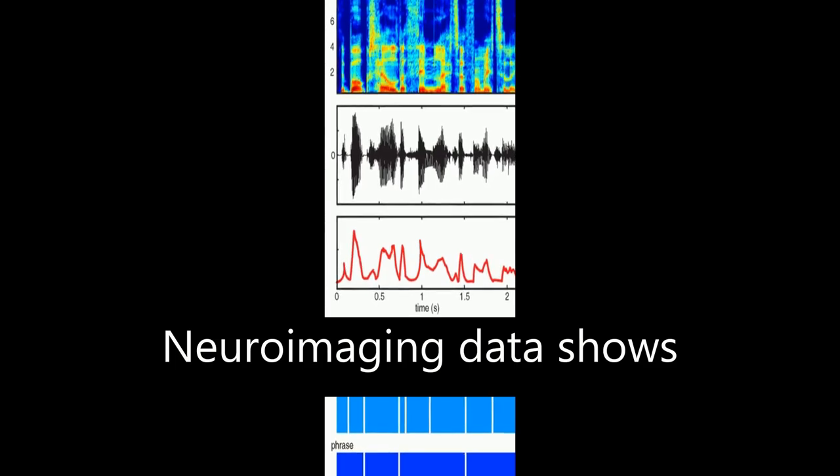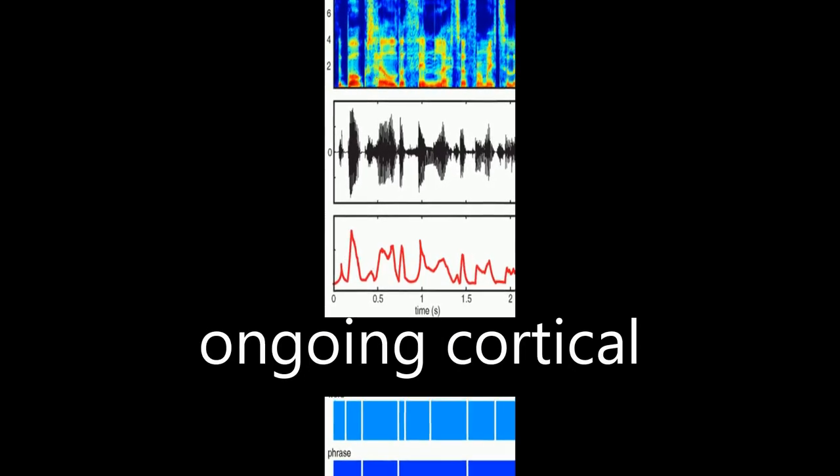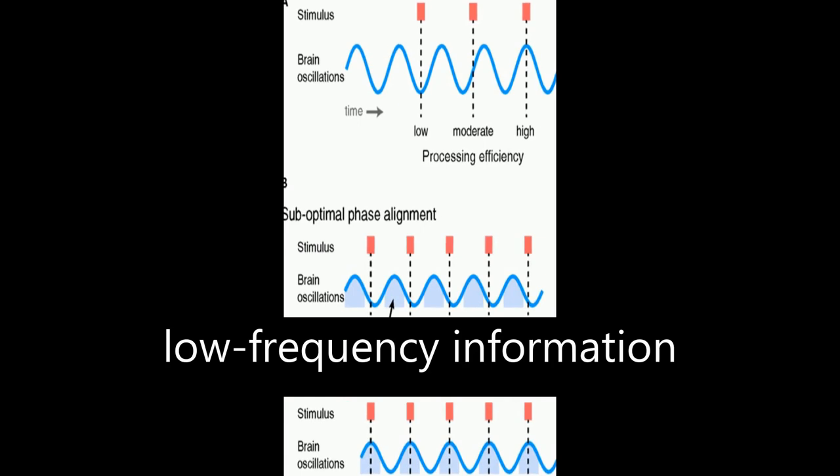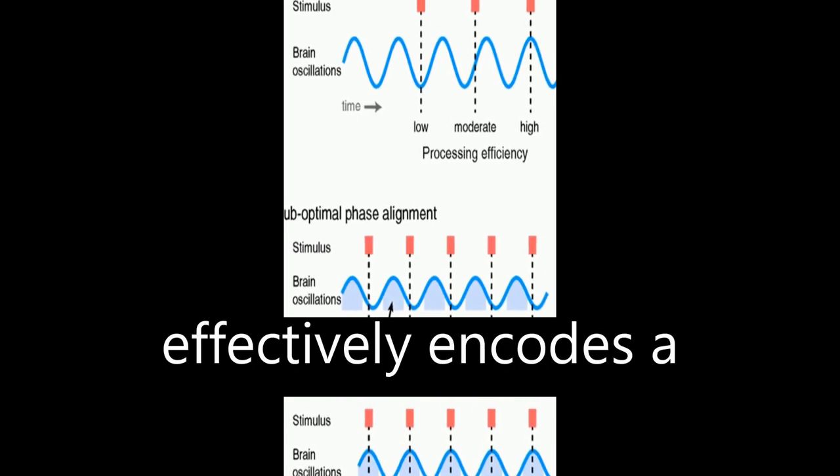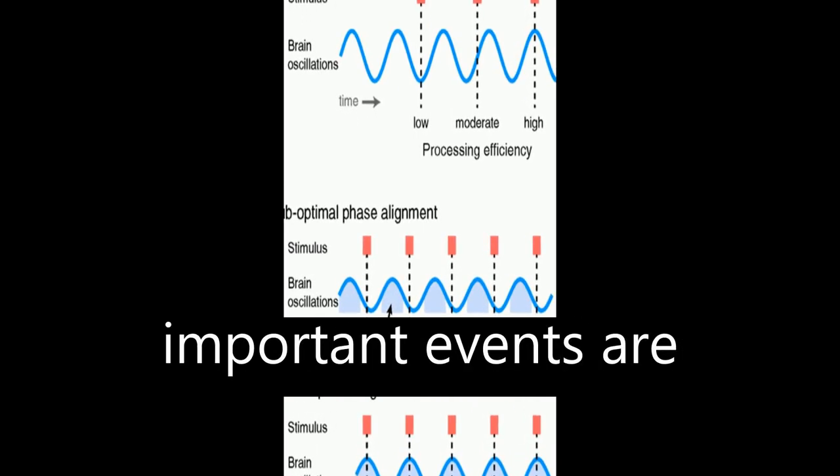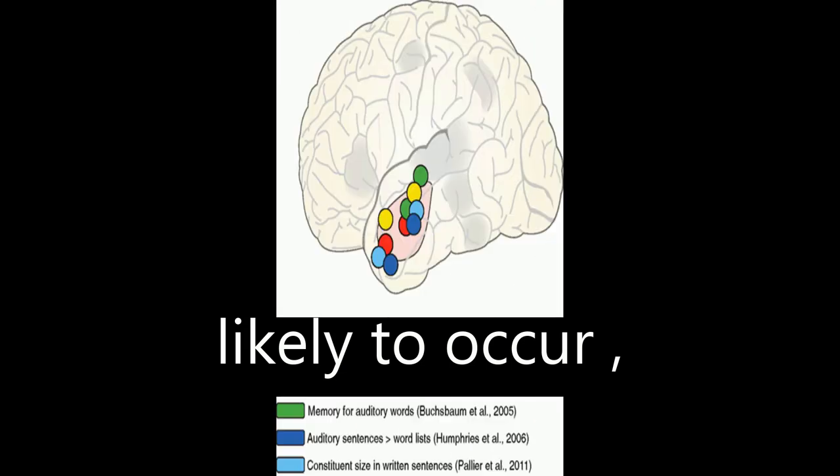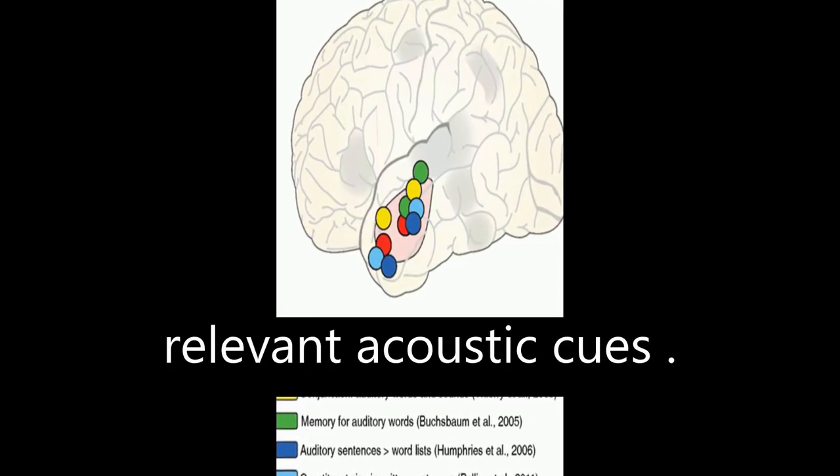Neuroimaging data shows that phase locking by ongoing cortical oscillations to low-frequency information in the speech envelope effectively encodes a prediction of when important events are likely to occur, increasing sensitivity to relevant acoustic cues.